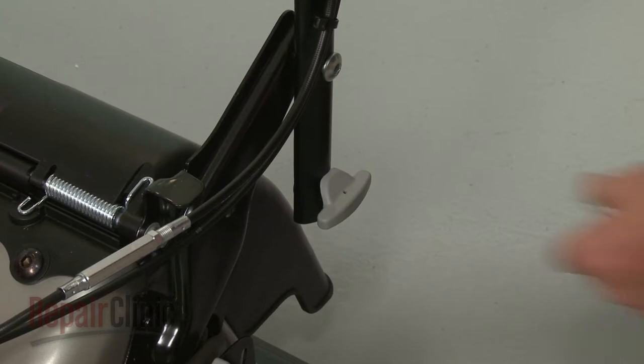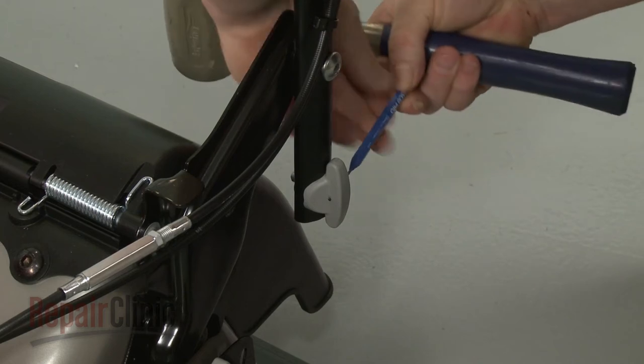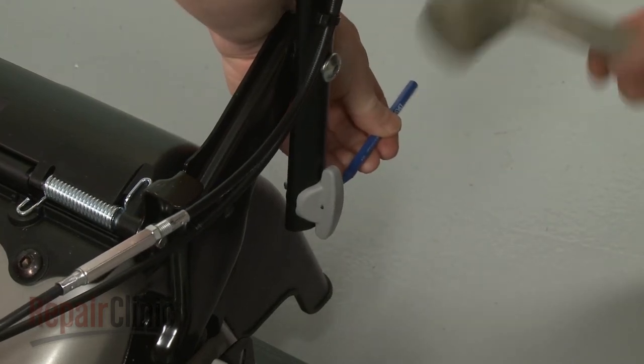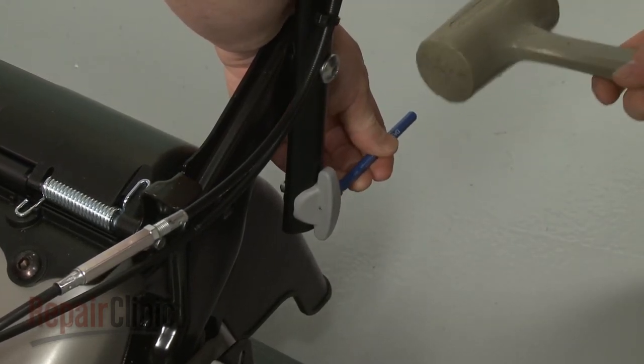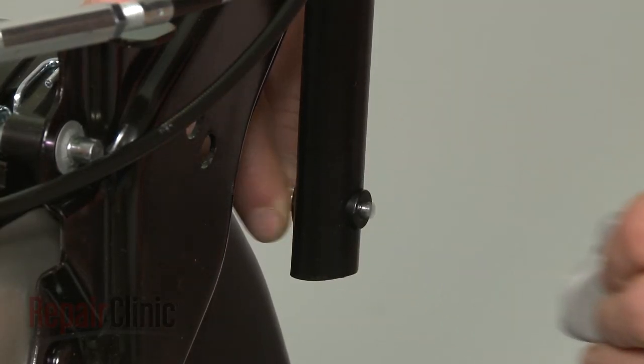Rotate the knob attached to the pin you're replacing another quarter turn to release the spring tension. Then use a 1/16 inch punch and a rubber mallet to knock out the roll pins securing the knob. You can now remove the knob and lock pin assembly.